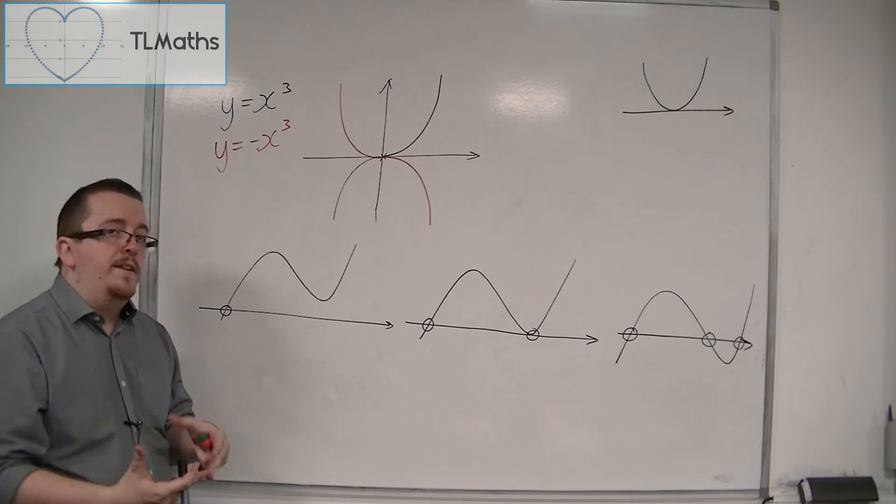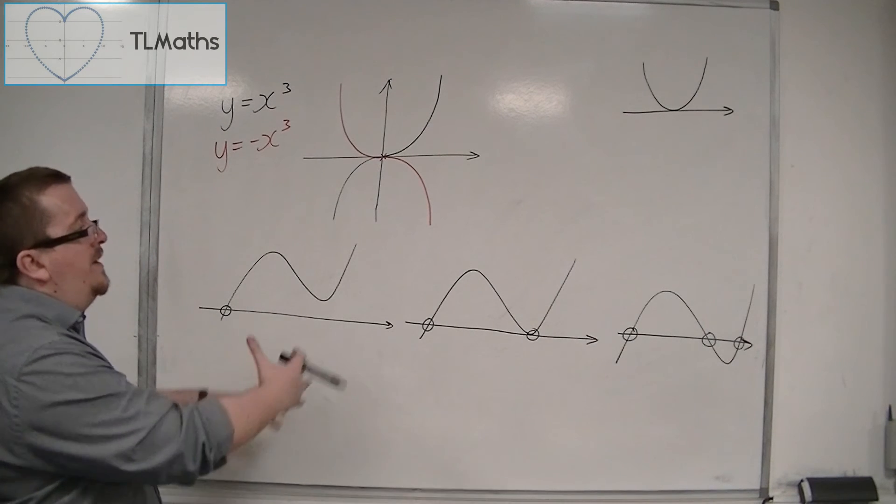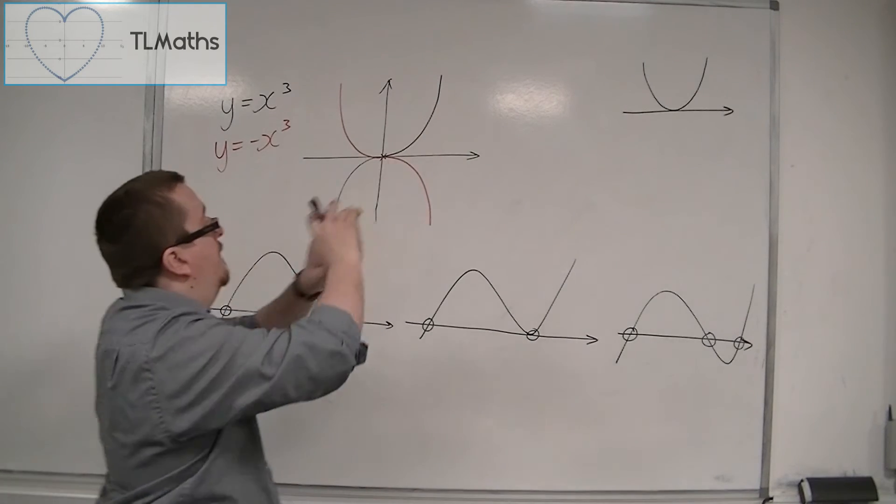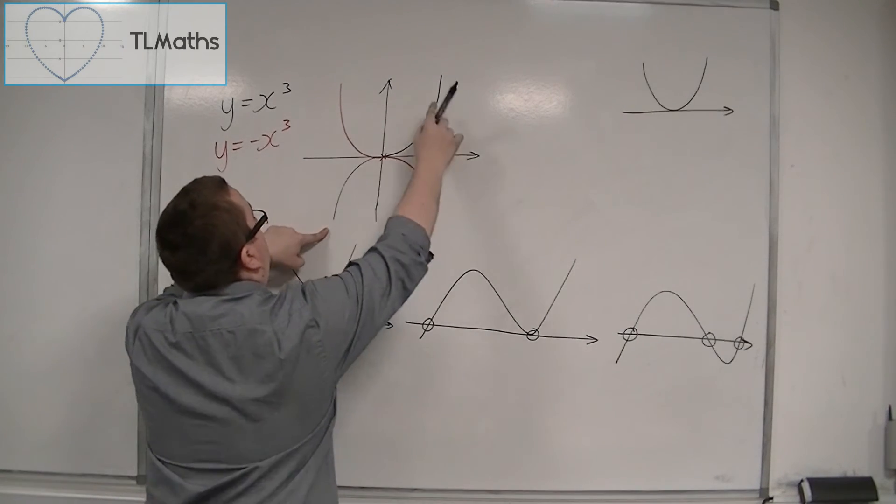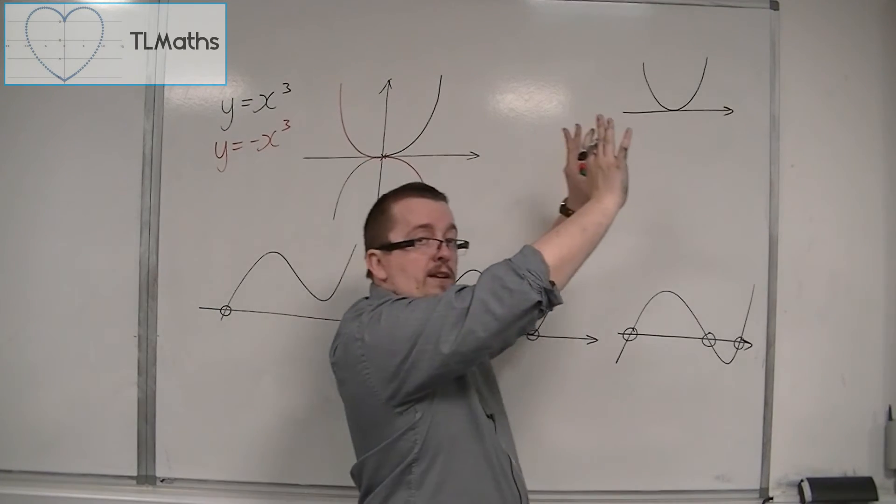And this can be identified from seeing that they're all starting in the bottom left and ending up in the top right, very much as our positive x cubed did here, starting in the bottom left and ending up in the top right.